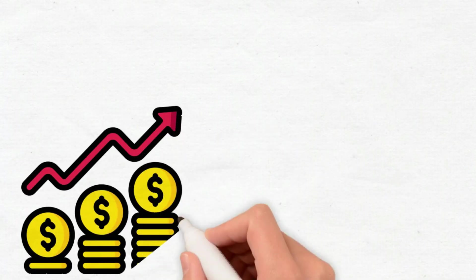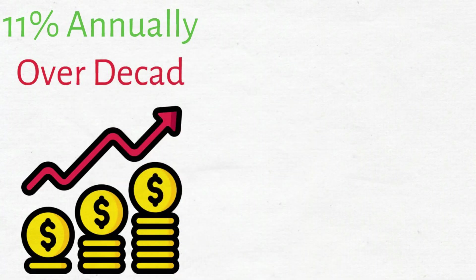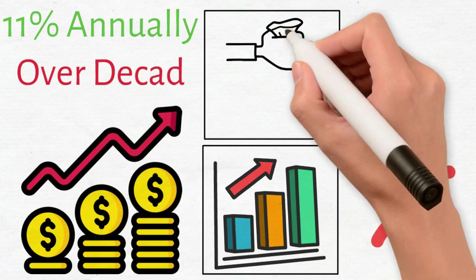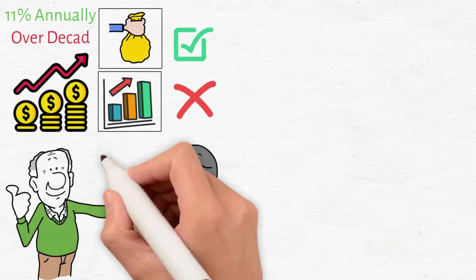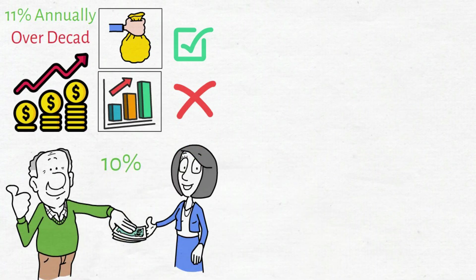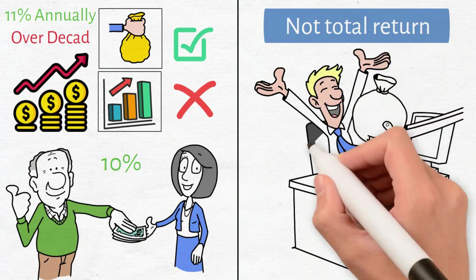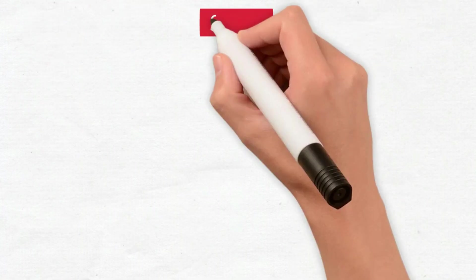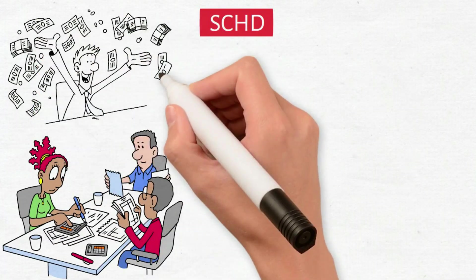What I'm about to reveal changes everything you think you know about building wealth. The numbers are so compelling, Wall Street keeps this strategy quiet. There's an ETF that has compounded dividends at over 11% annually for more than a decade. Not stock price, actual cash payments. Long-term holders now receive annual yields exceeding 10% on their original capital. Not total return, pure passive income every year from shares purchased years ago. This is SCHD, and understanding yield on cost is your path to financial independence.